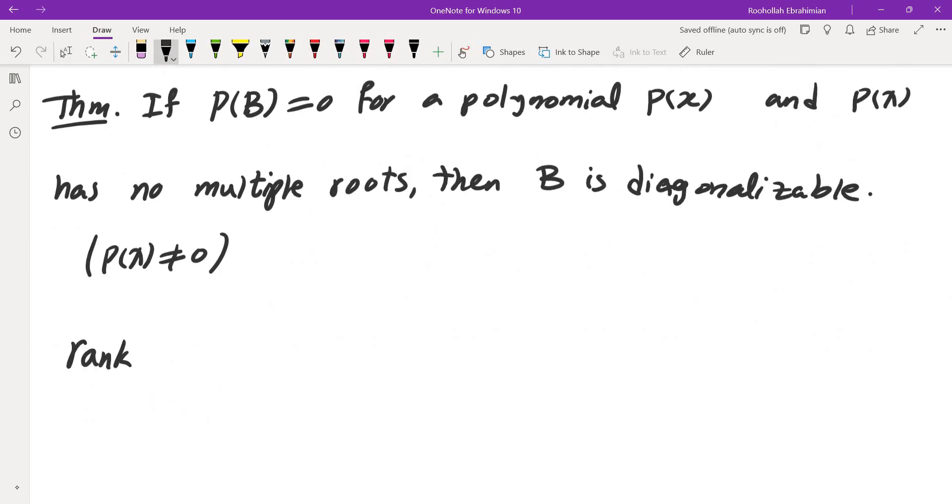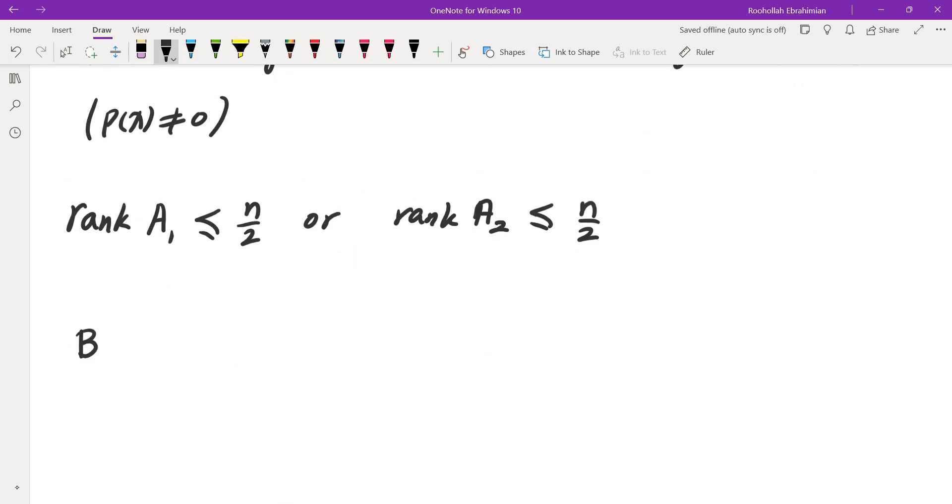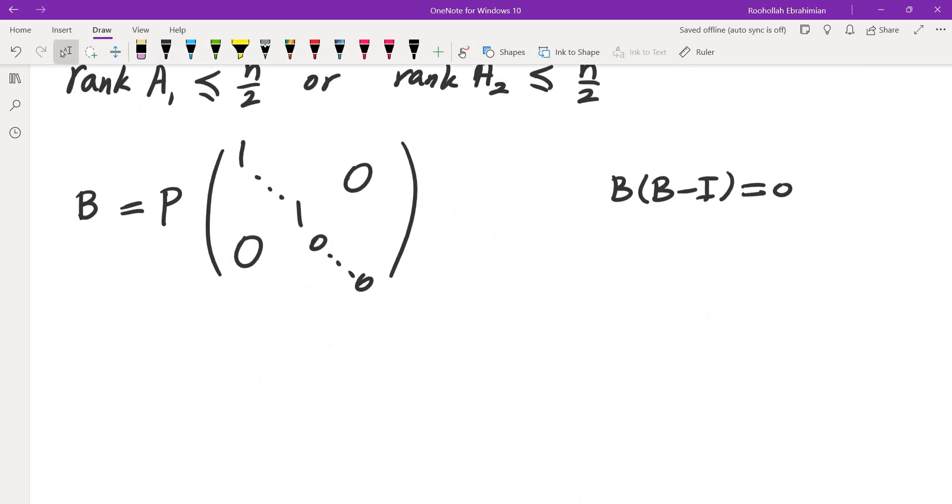Now, they talked about rank. The question asked us to show that rank of A is less than or equal to n over 2, or rank of A2 is less than or equal to n over 2. So how can I relate the fact that it's idempotent with rank? So when I look at this B that is idempotent, I know that it can be diagonalized. So I can write it as P times a bunch of 1s on the diagonal and a bunch of 0s. Because the only eigenvalues of this B, we know that B squared minus B is 0. So the only eigenvalues are 0 and 1.